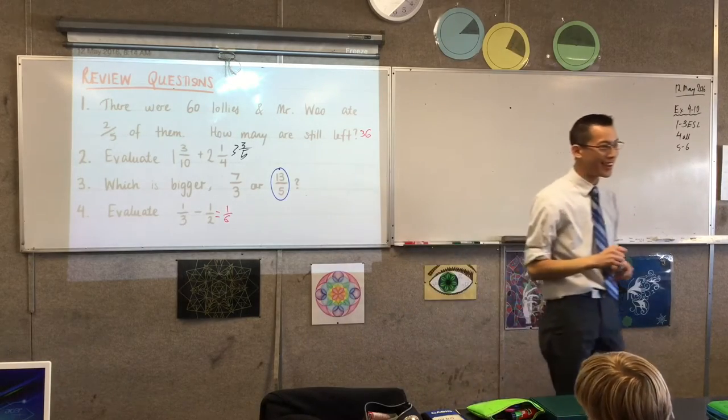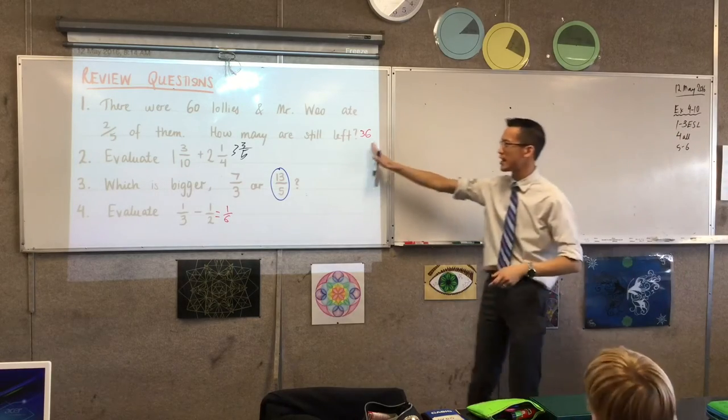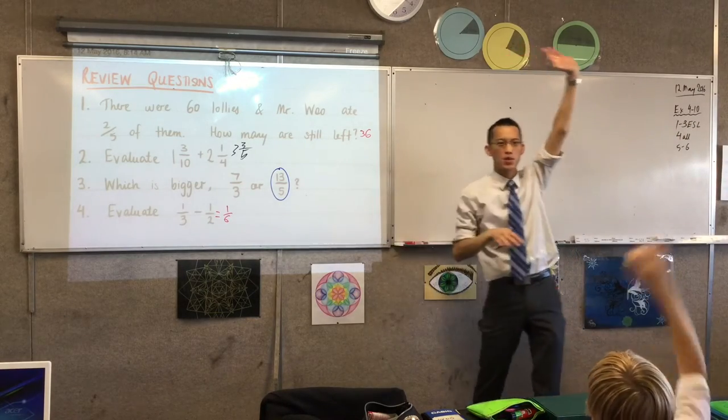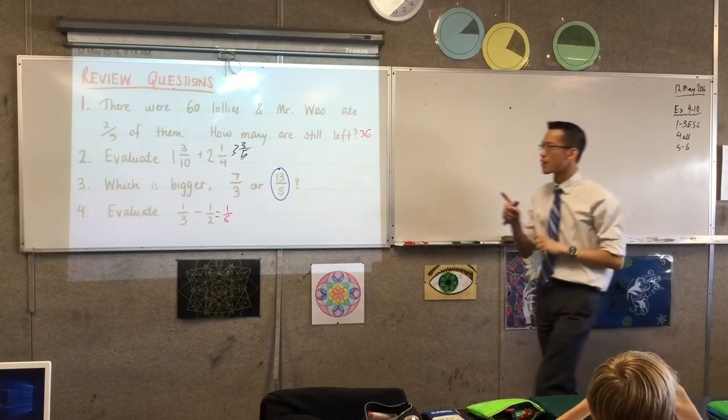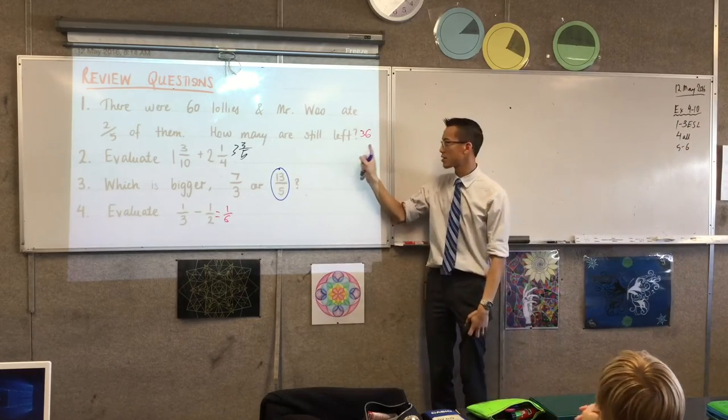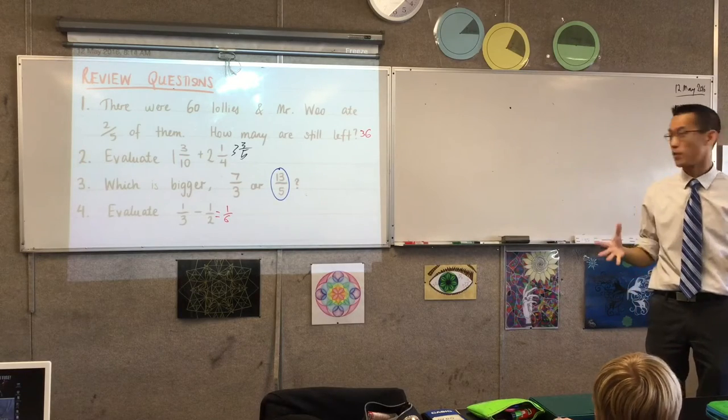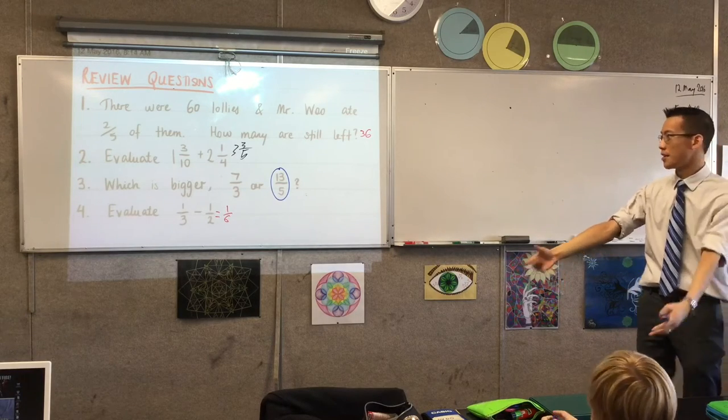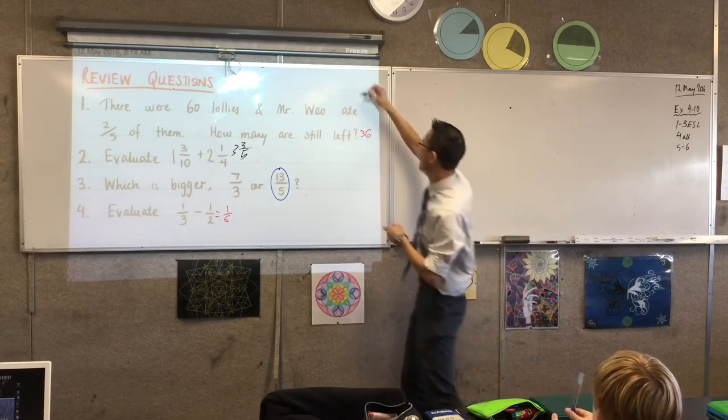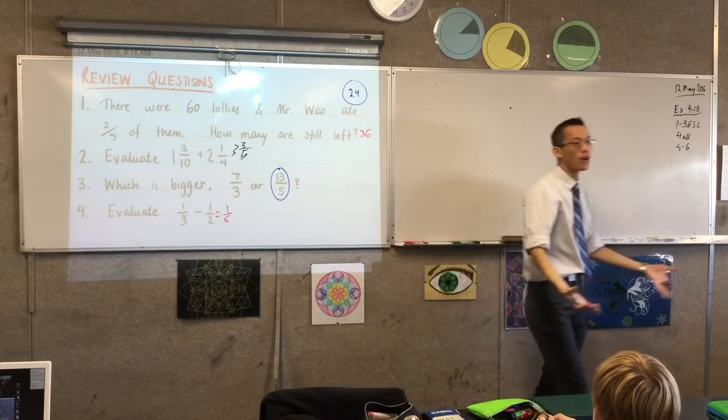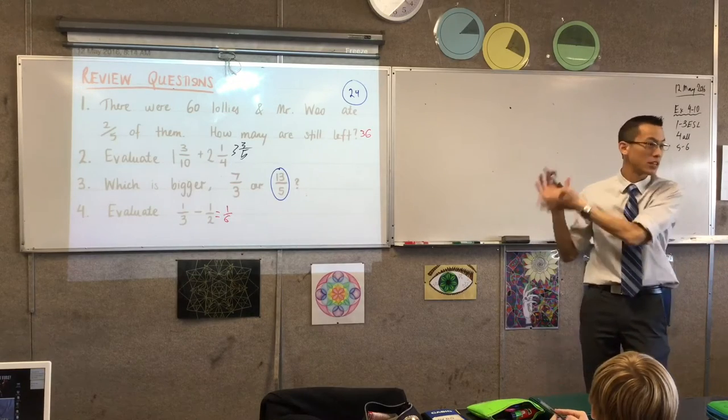There were 60 lollies and I was a total pig so I ate two-fifths of them. Who agrees with 36 as to how many are left? Hands up. Okay, a lot of hands. Thank you. Hands down. But not all hands. Now I think 36 is not the first answer that a lot of people would have written out, or at least the first piece of working. What might be a common other answer that you could write based on this question? 24.